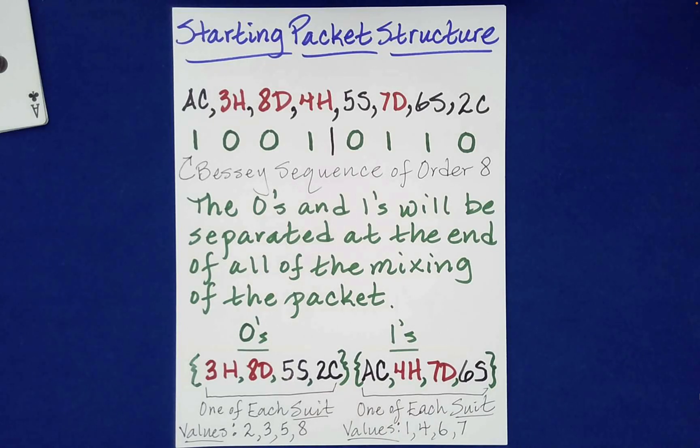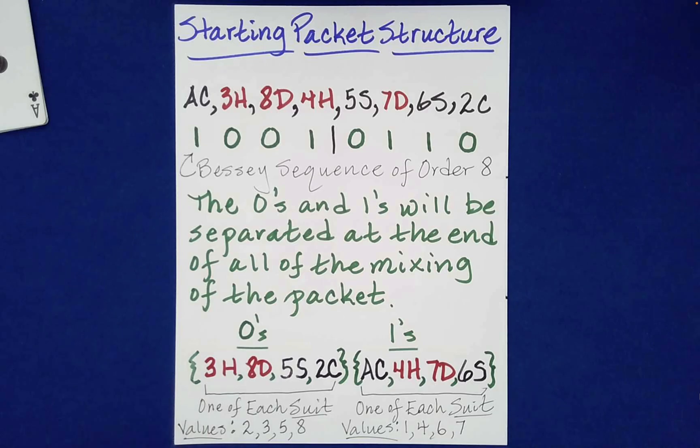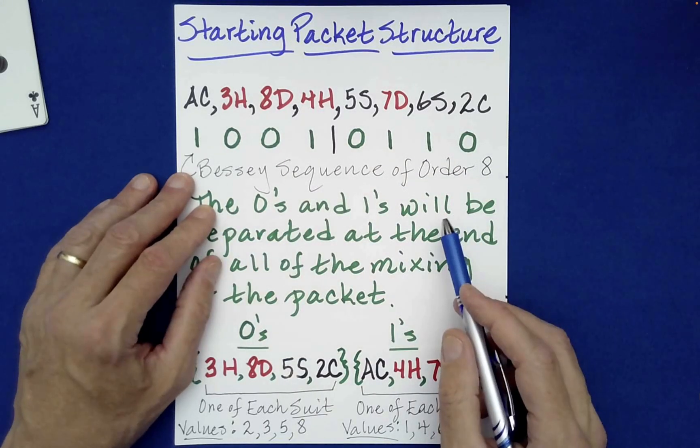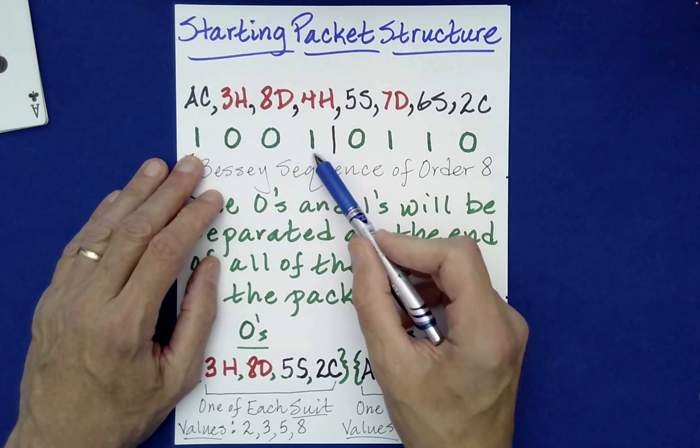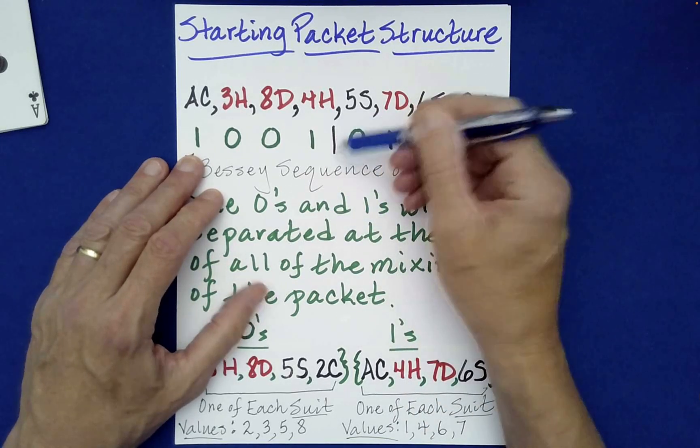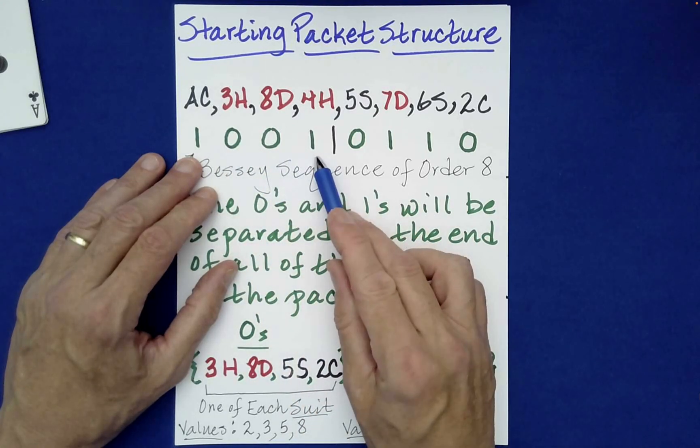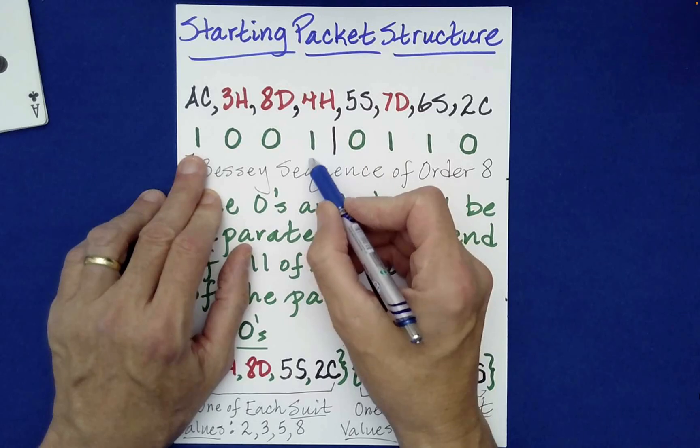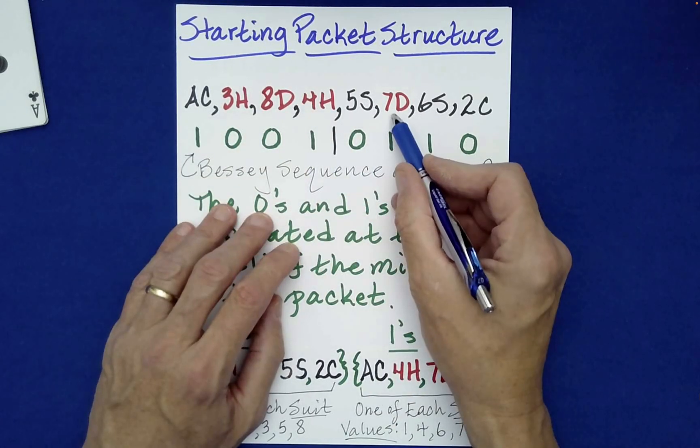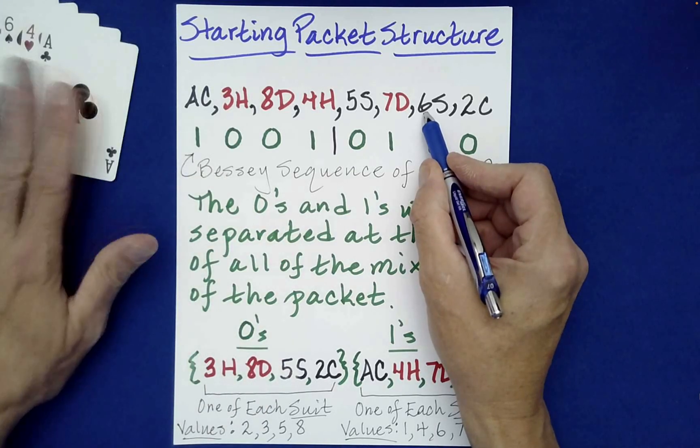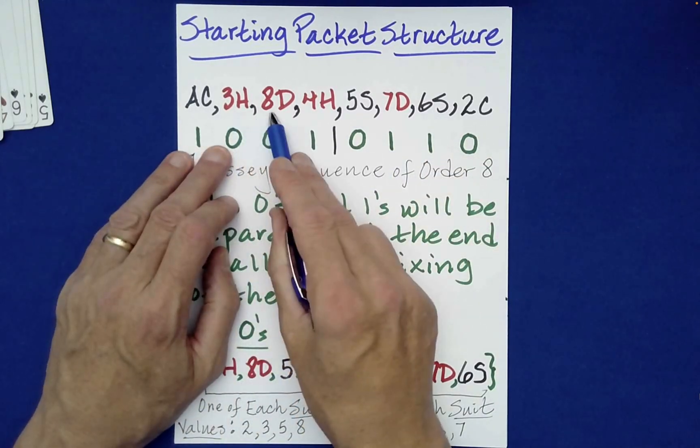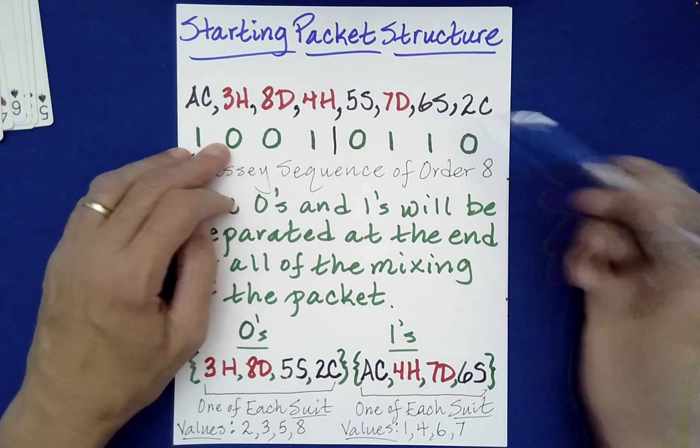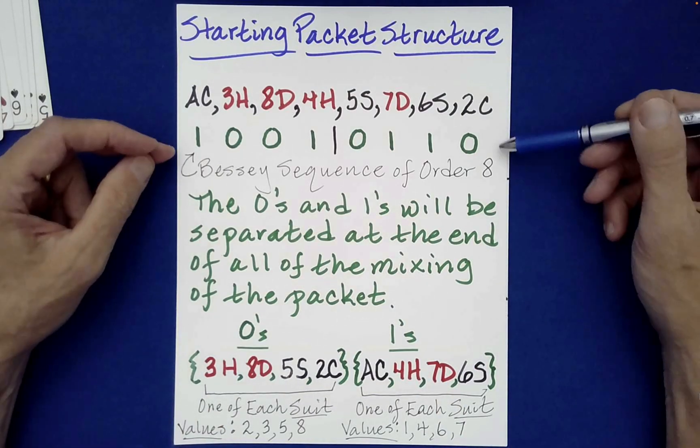So here's the setup. You can see what packet I had. I started with the ace of clubs and so forth. Now, I used a Bessie sequence of order eight to organize these cards. So what that means then is that the cards in positions marked by ones—this is just a dividing bar to show us the center—so it's 1, 0, 0, 1, 0, 1, 1, 0. Now the ones correspond to the ace, a 4, a 7, and a 6. And those were the very values we saw here, right? 1, 4, 6, 7. The zeros correspond to 3, 8, 5, 2, or put in order 2, 3, 5, 8. And those were Fibonacci numbers. So this is called a Bessie sequence structure of order eight.